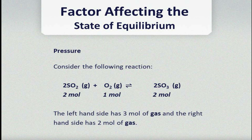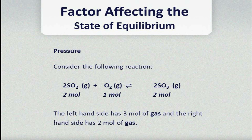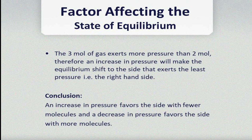Let's now consider the following reaction: SO2 plus O2 giving you SO3. When you look at this reaction, all species are gases, so we can talk about pressure. On the reactant side we have two moles and one mole, giving us a total of three moles on the reactant side. On the product side we have two moles. The left-hand side has three moles of gas and the right-hand side has two moles of gas.